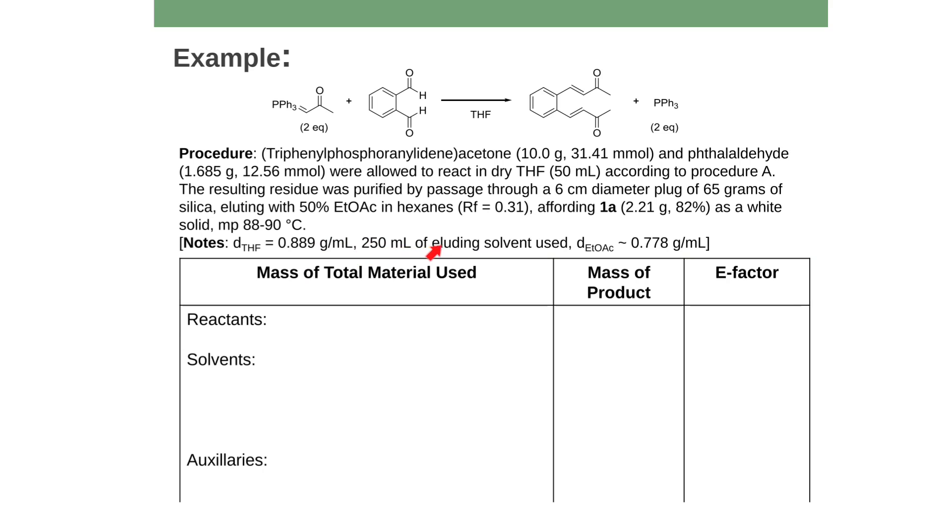Apparently it took 250 milliliters of eluting solvent in my column, so that's how much solvent I used when I ran my column. And then I also have the density of the ethyl acetate hexanes mixture, which is roughly 0.778 grams per milliliter. So what I have down here is a little table of I need to keep track of all the material I used, I need to look at the mass of the product I made, and then I can calculate the E factor.